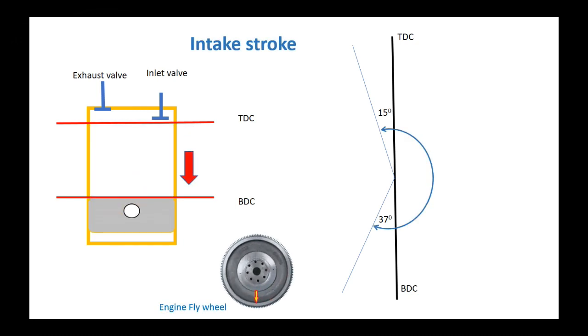After the piston moves to BDC, the inlet valve closes 37 degrees after the BDC. In this stroke we can see the flywheel nearly turns half round, but it actually turns 232 degrees. Why does this inlet valve open more than 180 degrees? It's an artifice designing to suck more inlet air into the cylinder.